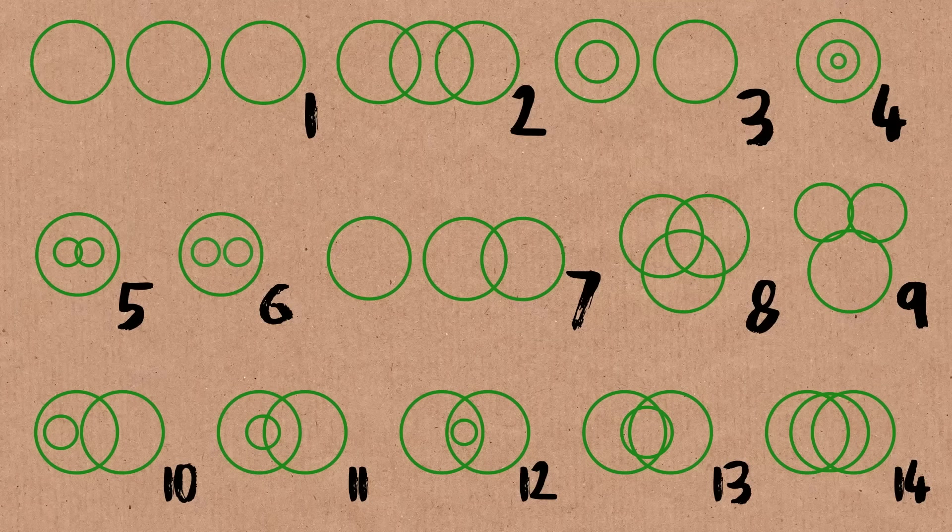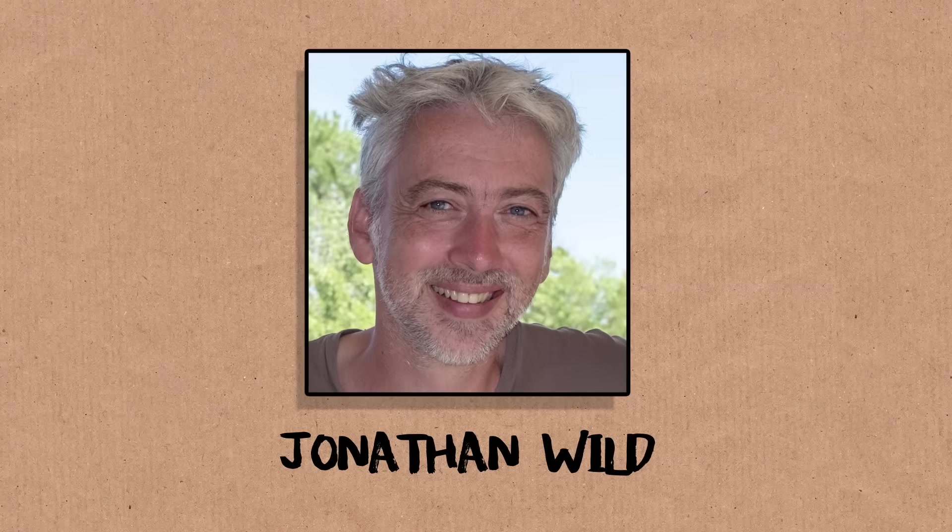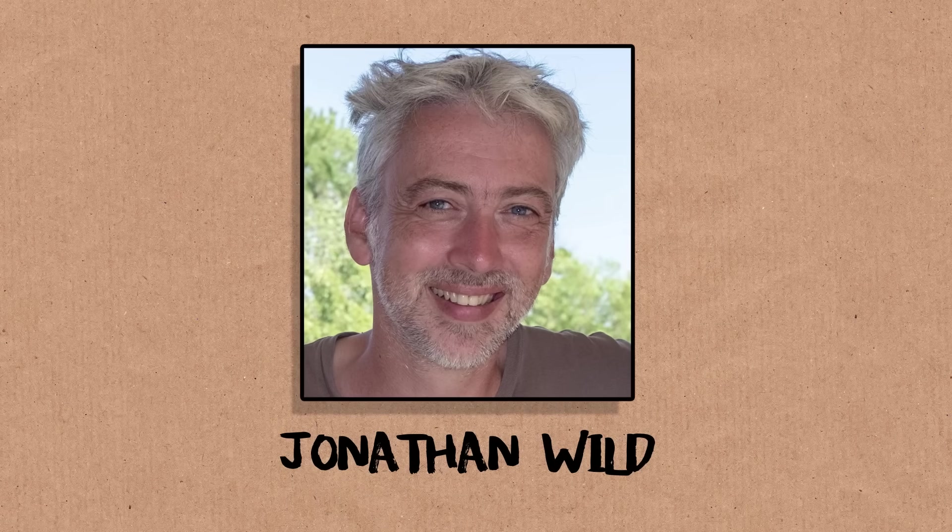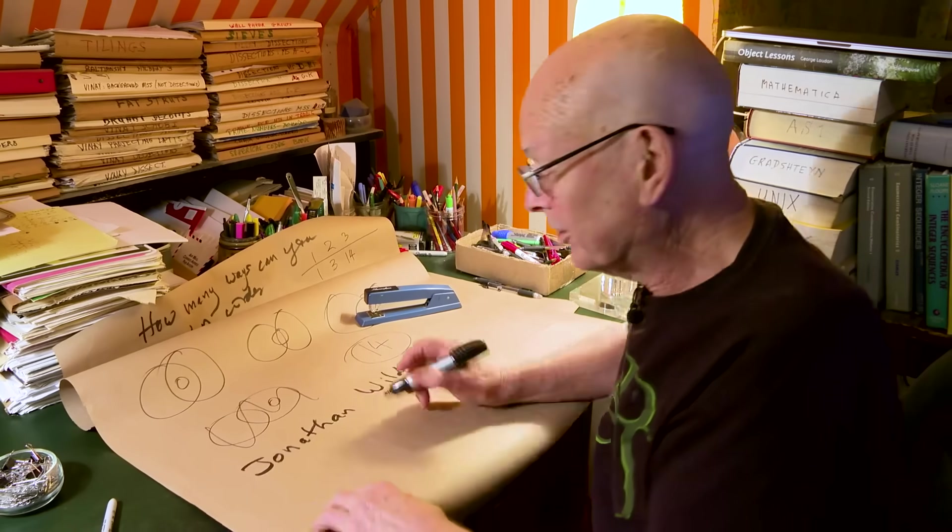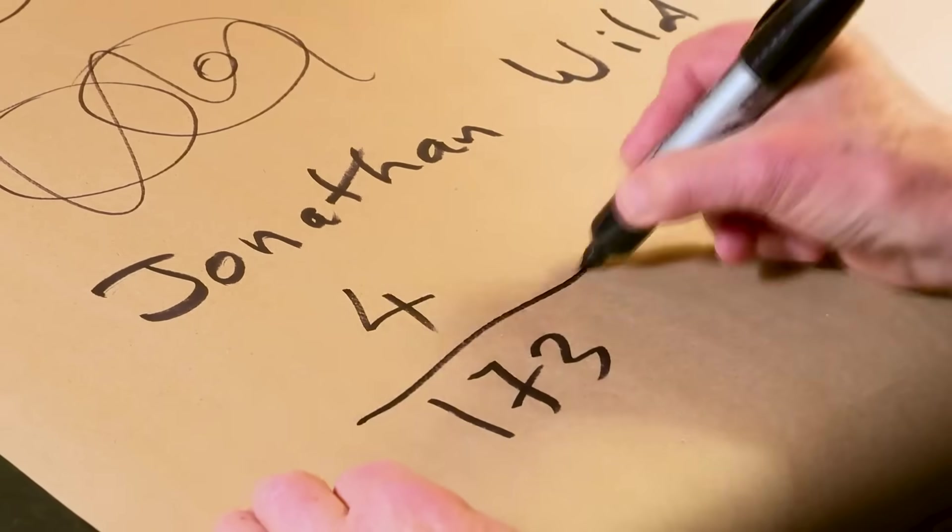That's pretty easy, but not trivial to do. Easy to miss one, if you start doing it. The question is what happens next? Jonathan Wilde, professor of music at McGill University, he has continued this sequence out to five terms, and for four, there are 173 ways to do it.